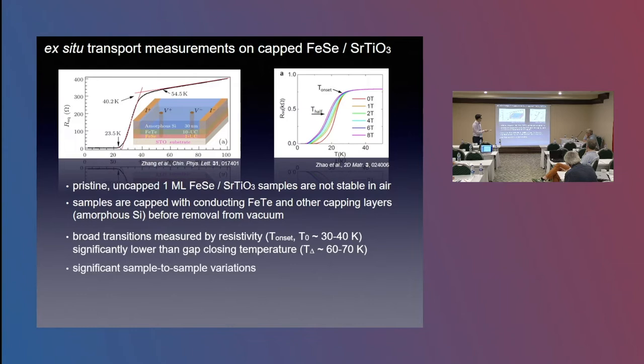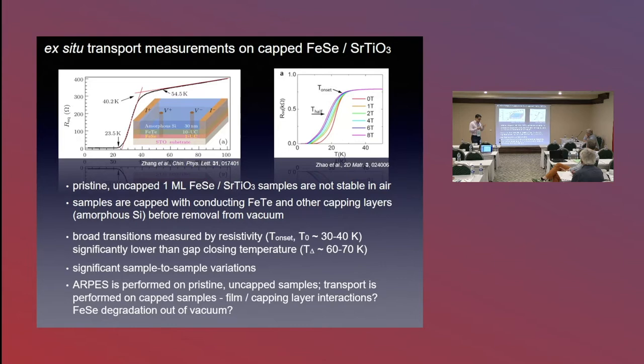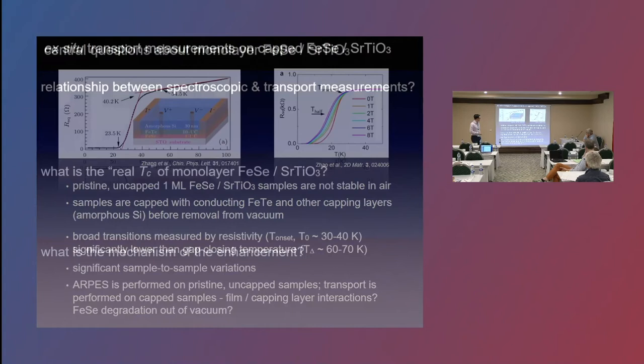And it raised the question: is photo emission measuring something different than transport? Because transport is measuring these cap films. We know that the enhancement only exists for the first monolayer. So maybe there's some substrate cap interaction or there's some residual degradation there. So that was one of the questions that we wanted to answer.